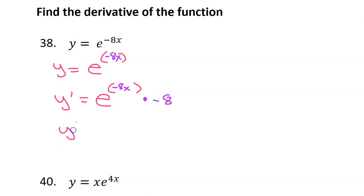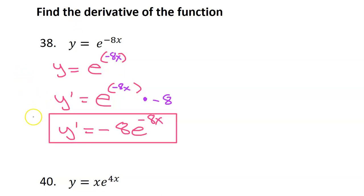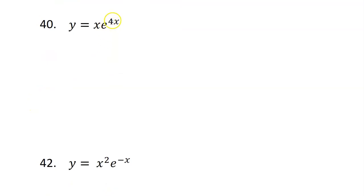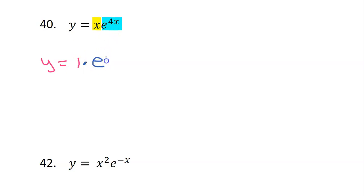And probably we would put that in the front, so we'd get negative 8e to the negative 8x power. For number 40, get ready for the product rule and the chain rule, because we can see this as the product of the function x times the function e to the 4x power. According to the product rule, first we take the derivative of the first function, which in this case is 1, and then we multiply by the other function left the way it is.